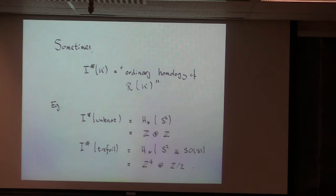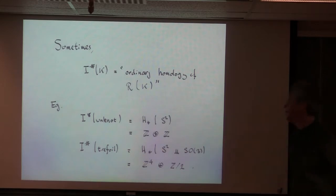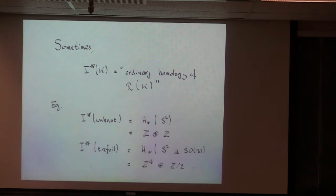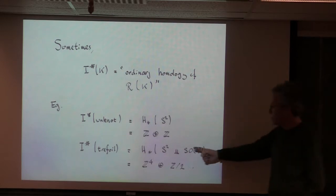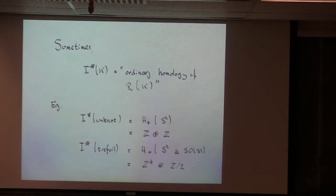In some very simple examples it can turn out that there are no relevant flow lines between different components of the original representation variety — a perfect Morse function situation — so the homology group ends up computing the ordinary homology of the representation variety. That's exactly what happens for the unknot: the representation variety was a copy of the two-sphere, and the instanton homology is just the homology of that two-sphere, Z plus Z. For the trefoil the representation variety was a two-sphere and a copy of SO(3); their ordinary homology is Z^4 and Z mod 2, which is indeed the instanton homology of the trefoil. There is a cyclic grading by Z mod 4, but not an integer grading.